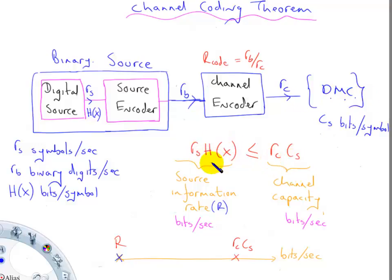As long as the source information rate is less than the channel capacity, then what Shannon proved is that there is a channel encoder and a channel decoder on the other side which can achieve virtually error-free communication over this communication system.